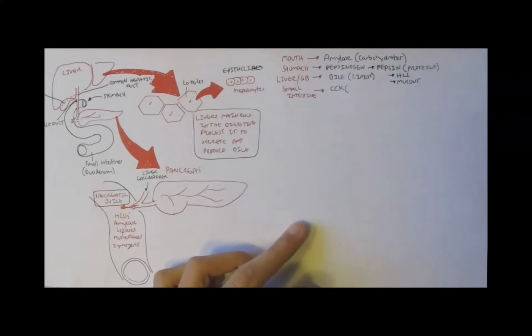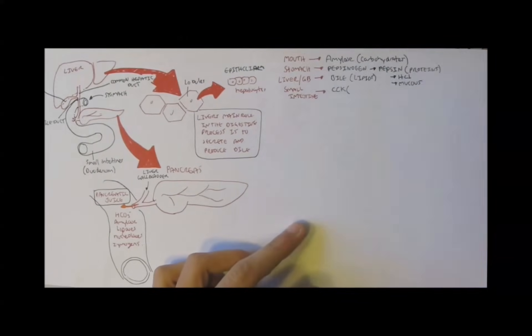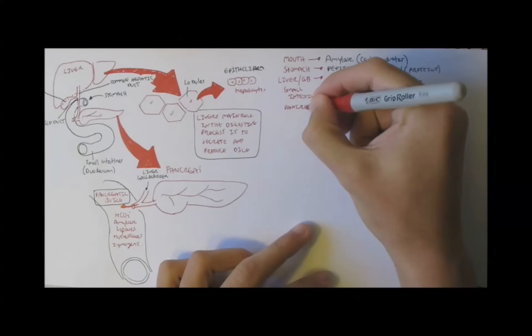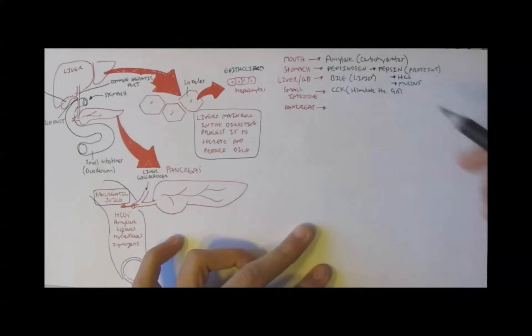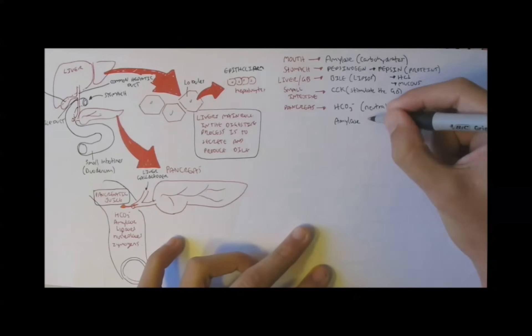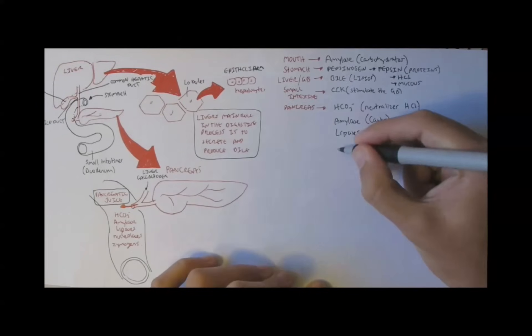The small intestine secretes cholecystokinin, CCK, which stimulates the gallbladder to contract and release bile. The pancreas, which we just learned, secretes bicarbonate, which neutralizes hydrochloric acid, because the food leaving the stomach would be acidic after the hydrochloric acid secretion. So, bicarbonate neutralizes it.